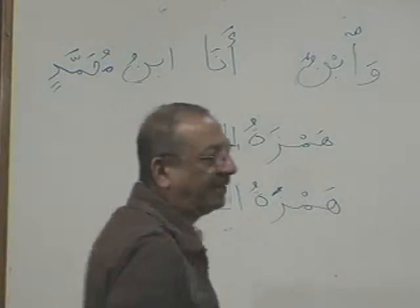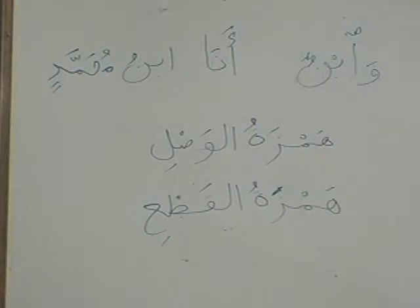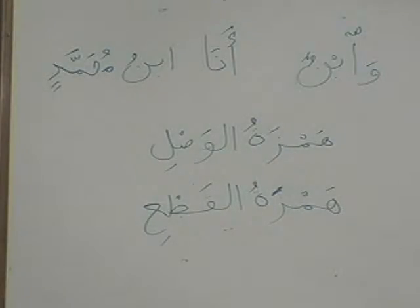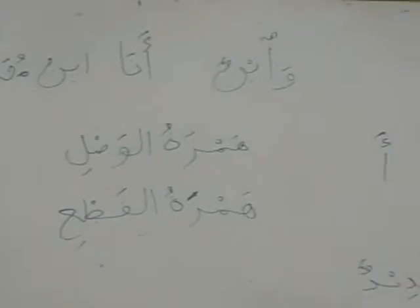Ana Ibnu Muhammadin. Ana is mubtada, there is khabar — Ibnu, wahua mudaaf, and then mudaafilihi. But how will I pronounce? Anabnu. Why? Because it is Hamzatul Wasal and something came before it. Now look at Ana — you have noon with fatah, and after that Alif. What is on Alif? Sukun. Remember? There are three vowel signs in Arabic: dhamma, fatah, and kasra. If there is no vowel sign on a letter, then automatically there is a sukun.